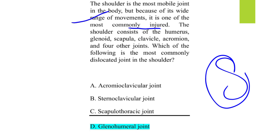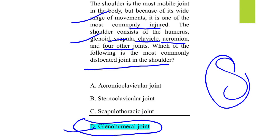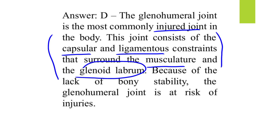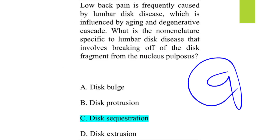MCQ number eight: the shoulder is the most mobile joint in the body, but due to its wide range of motion it is also one of the most commonly injured. The shoulder consists of the humerus, glenoid cavity of the scapula, clavicle, acromion, and four joints. The most commonly dislocated joint in the shoulder is the glenohumeral joint.